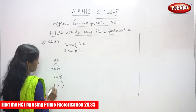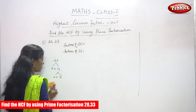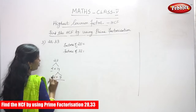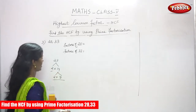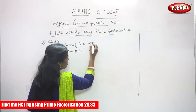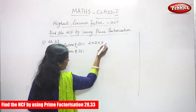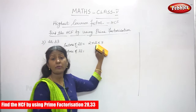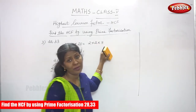So these are the factors. So 2 into 2 into 7 — these are the factors of 28. Write the factor of 28 as 2 into 2 into 7. So 2 into 2 is 4, and 4 into 7 you get 28.